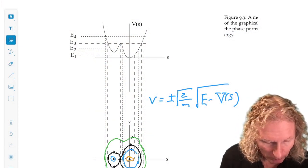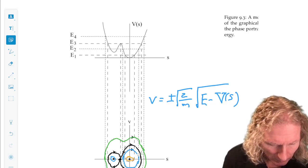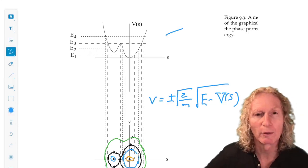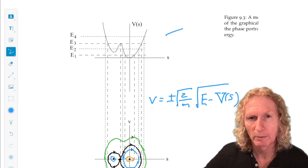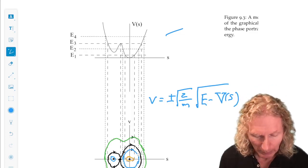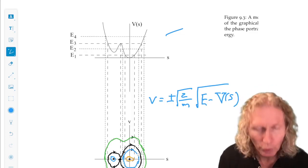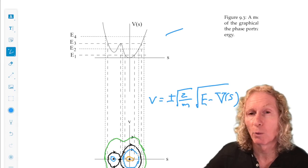Okay, so above I have an example of a potential energy function, V of s, and it has two local minima and one local maxima.